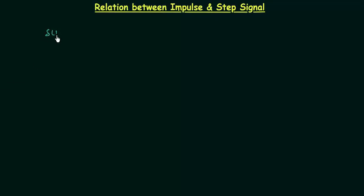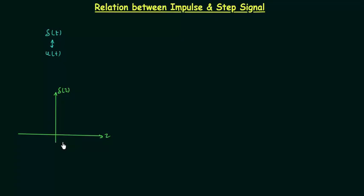We have sufficient knowledge of unit impulse signal and unit step signal. Now we will find out the relation between them. I will first draw the waveform of unit impulse signal δ(τ). When τ is equal to zero, δ(τ) rises to infinity. If you want to calculate the area of δ(τ), you need to integrate it with respect to dτ from minus infinity to infinity, and you will have area equal to 1. This is the property of unit impulse signal.